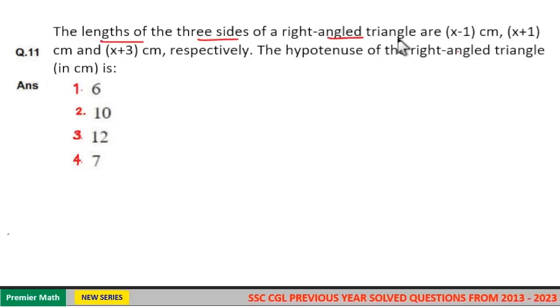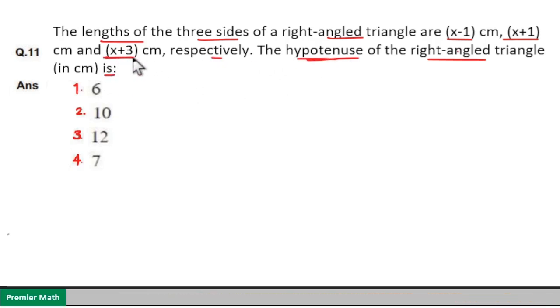The lengths of the three sides of the right angle triangle are x minus 1 centimeter, x plus 1 centimeter, and x plus 3 centimeter respectively. The hypotenuse of the right angle triangle is x plus 3, since x plus 3 is the largest.